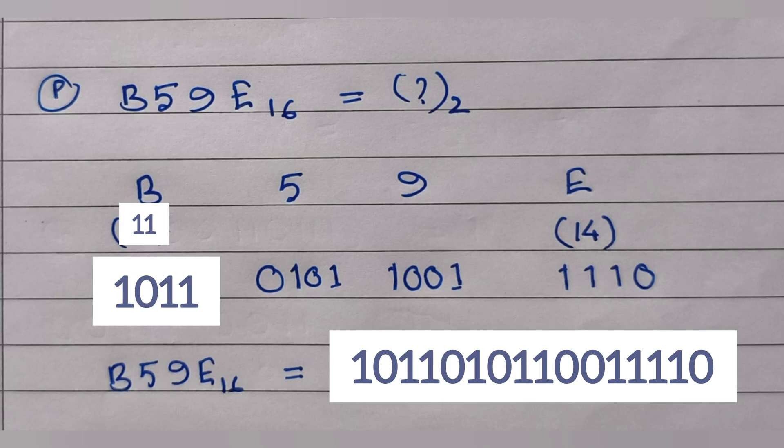In this sum we have to convert a hexadecimal number into binary. The number is B59E. We write each digit with little gaps: B, 5, 9, E. We write the decimal equivalent of each — B is 11, E is 14. Then we convert each digit separately into binary, writing the answer in groups of four digits. So B gives 1011, 5 gives 0101, 9 gives 1001, and E gives 1110. We then write all digits together to get the final answer.